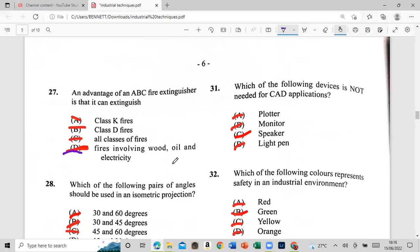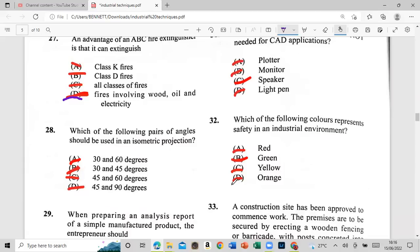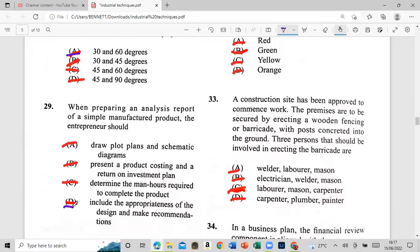First person to type them in. When preparing analysis report of simple manufacturing product, the entrepreneur should. And that is the include appropriateness of today. Have to make recommendation design. You guys make a pause of the video. I'm going to make an answer that now. Hello? All right. So we are at 30 now. And remember, guys, I want you guys to type in the answer, see how many you get. Let's be honest, all right?